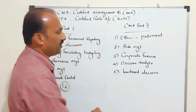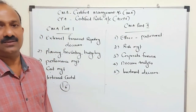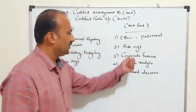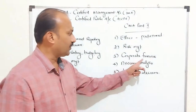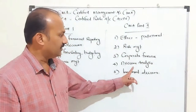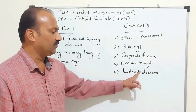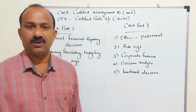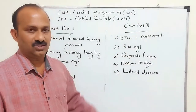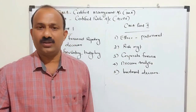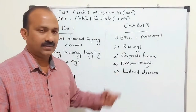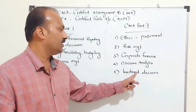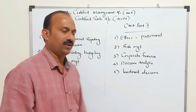CMA Part 2 covers strategic areas: ethics for professionals, risk management, investments, corporate finance, decision analysis, and investment decisions. The major areas covered in Part 2 are ethics, investment decisions, corporate finance, and decision analysis.